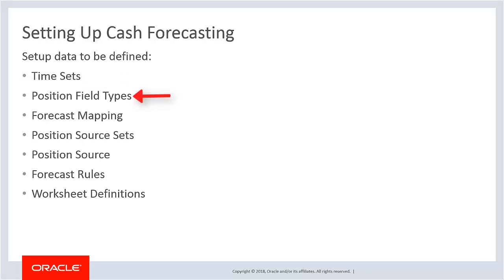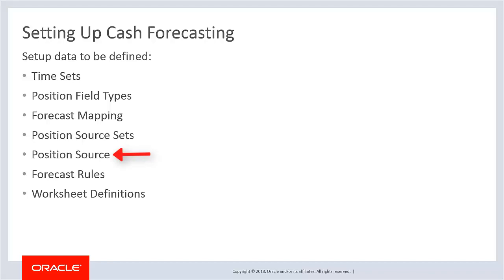Position field types define field names. Forecast mapping is used to set up dimensions to report cash forecasting numbers. Position source sets are used to define sources such as actuals or projected. Position source is used to define position records, drill back details, and selection criteria for position sources.